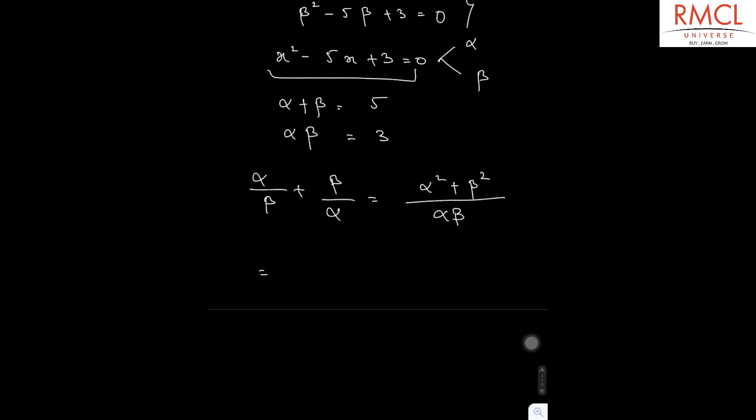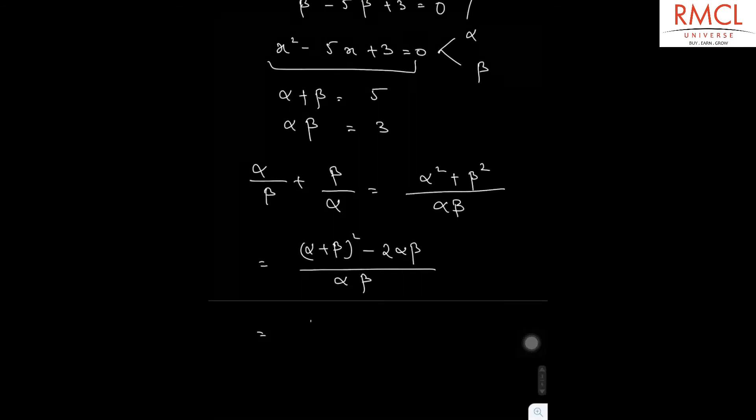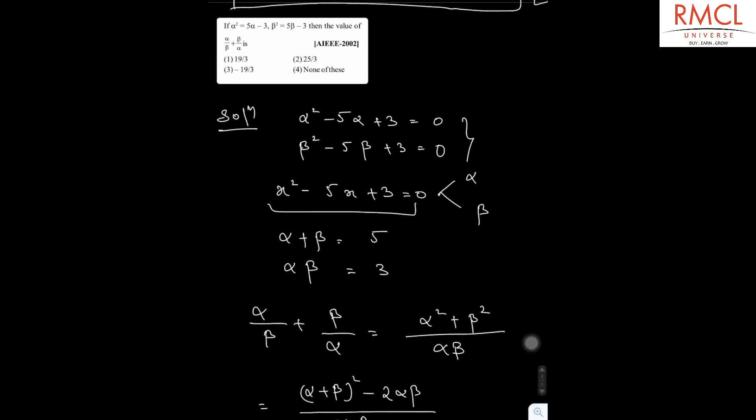Alpha squared plus beta squared is alpha plus beta whole squared minus 2 alpha beta divided by alpha beta. The value of alpha plus beta is 5, so the square of 5 is 25 minus 2 alpha beta that is 6 divided by 3, which gives us 19 by 3.